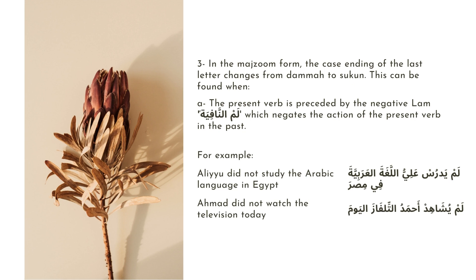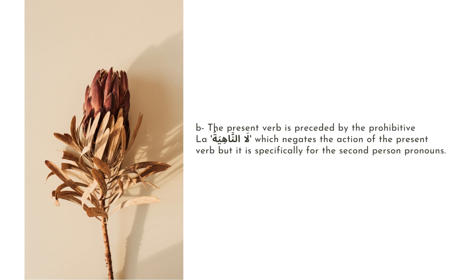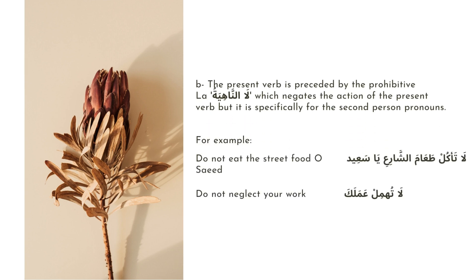Another case where we find the majzum is when the present verb is preceded by the prohibitive la, that is, la anna here. This negates the action of the present verb, but it is specifically for the second person pronoun. For example, 'La ta'kul ta'am al-shari' ya sayid' — do not eat the street food, sayid. Ta'kul here is our present verb, it is in the majzum form. 'La tuhmil amalak' — do not neglect your work. Tuhmil is our present verb, and it is also in the majzum form, carrying a sukun.